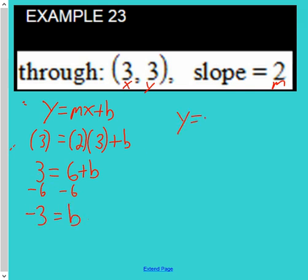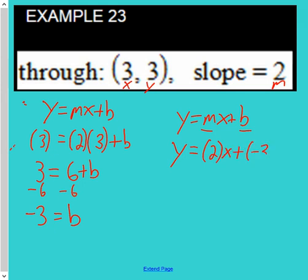Write y equals mx plus b again, only substituting in for m and b. m is 2, negative 3 is b, so clean it up and our final answer is y equals 2x minus 3.